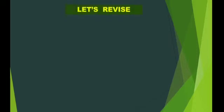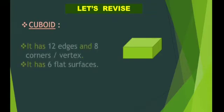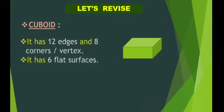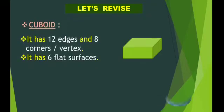Revise now children. Cuboid: Now what is a cuboid? A cuboid has 12 edges and 8 corners or vertex. It has 6 flat surfaces.